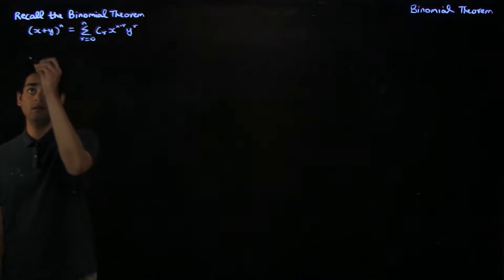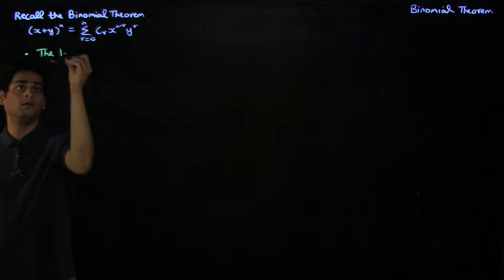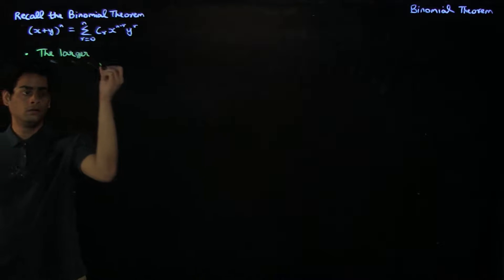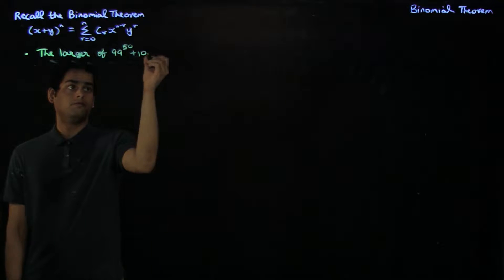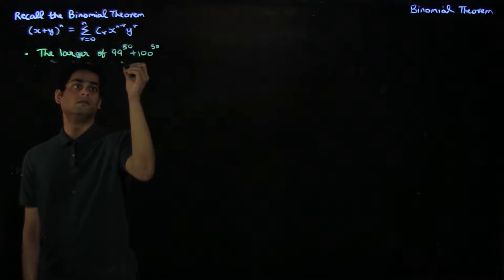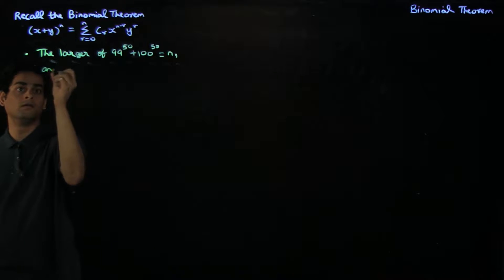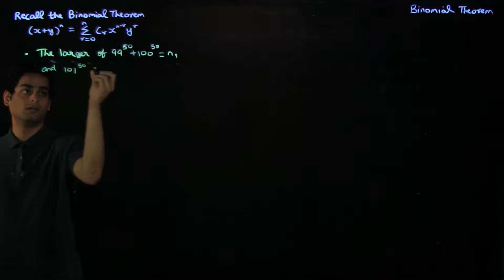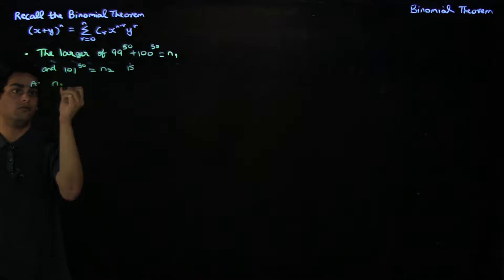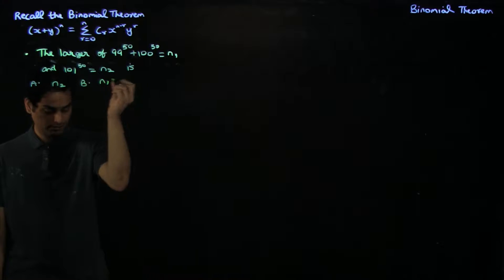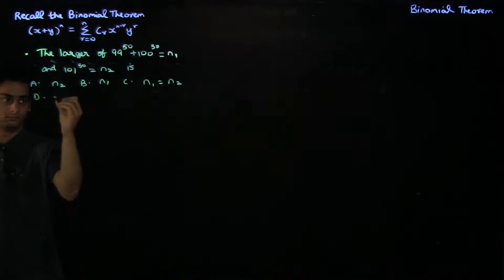So let's look at the first example. This example asks you to determine which of these numbers is larger: 99 to the power 50 plus 100 to the power 50, which I will call n1, and 101 power 50, which I will call n2. The options are n2, n1, n1 equals n2, and none of these.